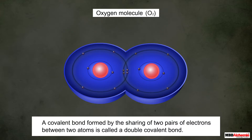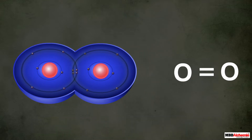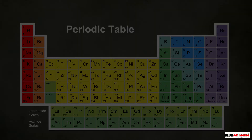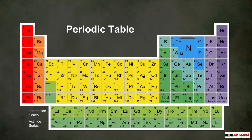A covalent bond formed by the sharing of two pairs of electrons between two atoms is called a double covalent bond. A double covalent bond is represented by a double dash between the symbols of two atoms.